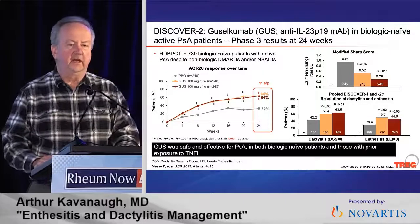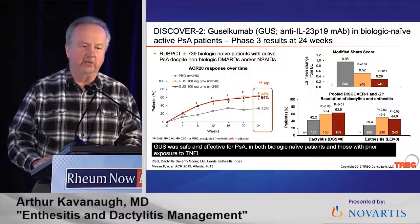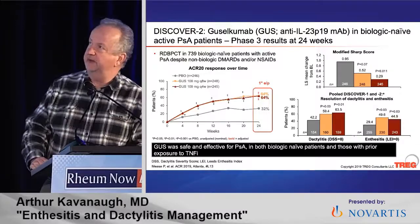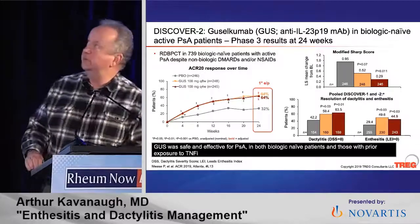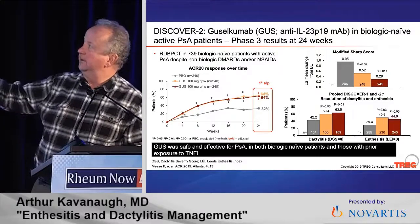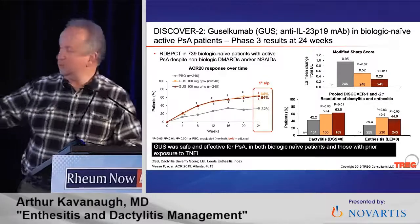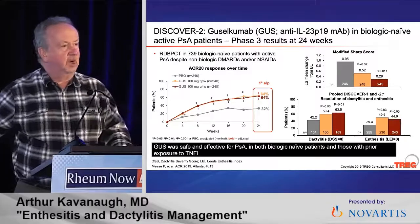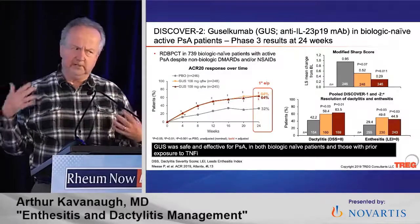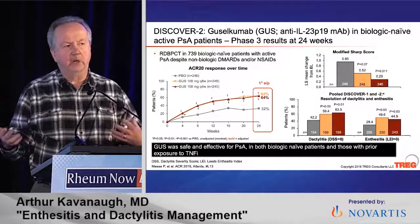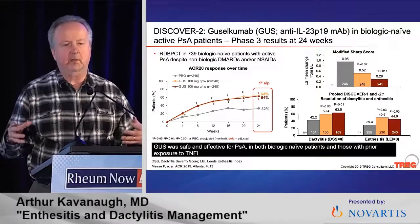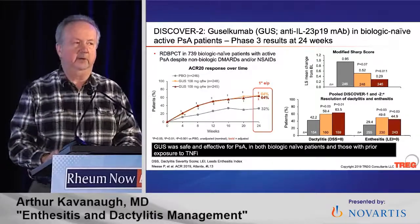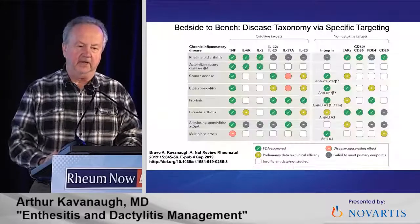What about the IL-23 P19 inhibitor guselkumab? We're getting more familiar with that in psoriatic arthritis. Looking at ACR20 responses with different doses, and at resolution of dactylitis — a dactylitis score of zero — and a Leeds Enthesitis Index score of zero, it can be effective. You can't compare head-to-head across studies, certainly not with enthesitis outcome measures where there may be some wobble. But there is clearly a statistically significant effect with IL-23 inhibition on dactylitis and enthesitis.